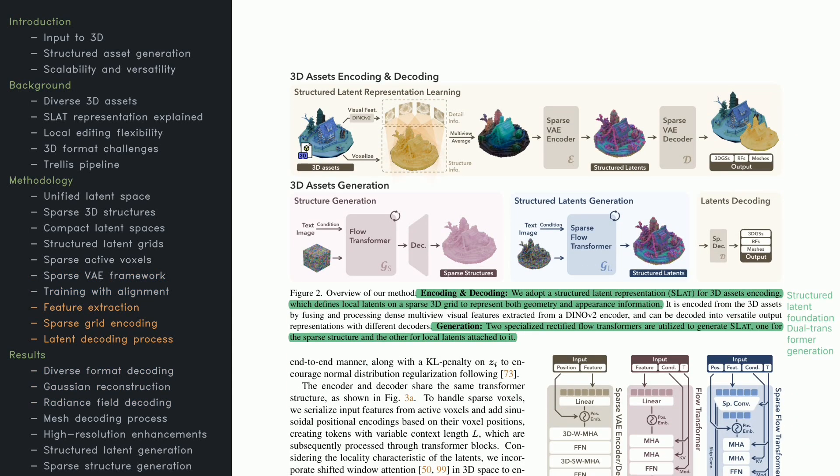So how does encoding and generation actually happen? First, multiple views of a 3D object are passed through a pre-trained model to get dense visual features. These features get combined into a sparse grid, capturing geometry and appearance. A variational autoencoder, VAE, then encodes this grid into structured latents, which preserves fine details in a compact form. Next, specialized transformers do the heavy lifting. One transformer determines the coarse 3D structure, while another refines the local latents. Together, they create a robust pipeline that can generate different final outputs.